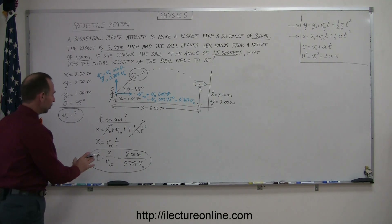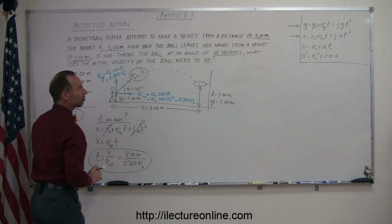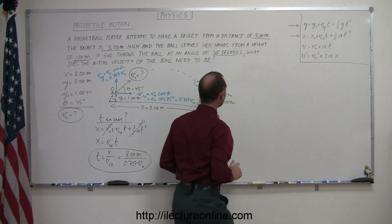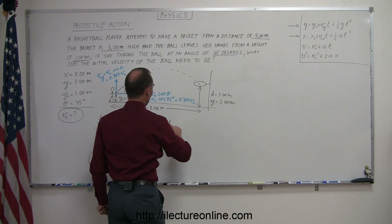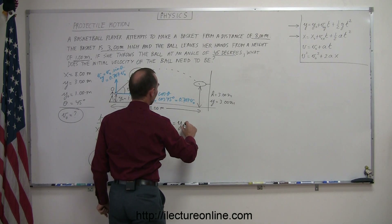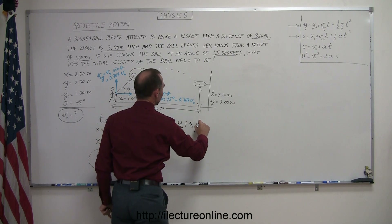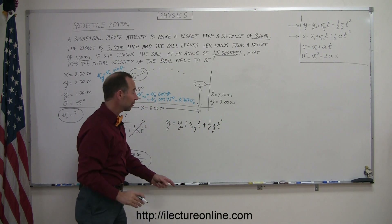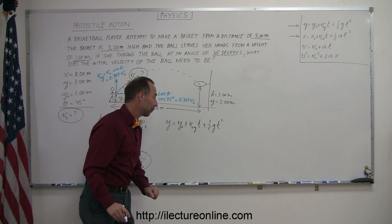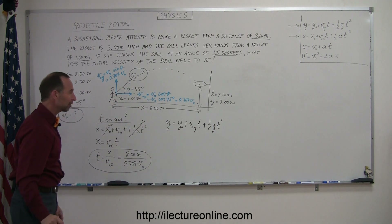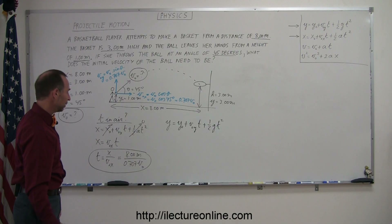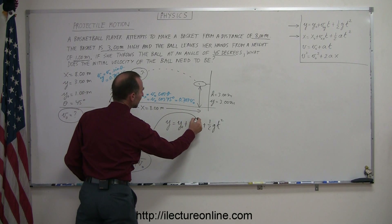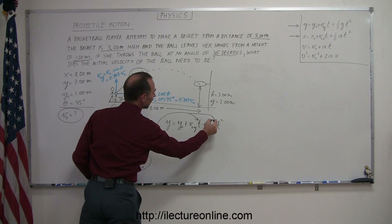Now I'll plug this into my second equation of kinematics for the vertical component. That equation is y equals y-naught plus v-naught-y times time plus one-half g t squared. Remember, in the vertical direction there is gravity, so we have an acceleration due to gravity g, which is negative 9.8 meters per second squared. I'm now going to plug this value for t into both the velocity and the squared time terms.